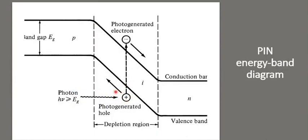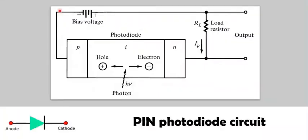This excites an electron from the valence band to the conduction band, so electron-hole pairs are formed. Once the electron-hole pairs are formed, you apply a reverse bias.